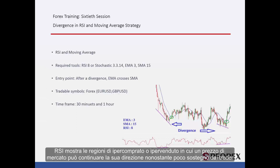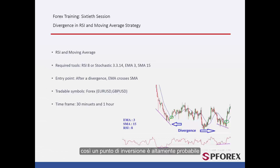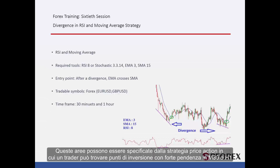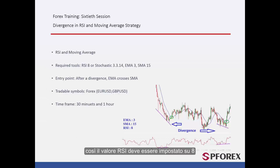RSI shows the overbought or oversold regions, in which a market price may continue its direction despite little support from traders. Thus, a reversal point is highly probable. These regions can be specified by the Price Action Strategy, in which a trader can find reversal points with sharp gradient in M30 or H1. Thus, RSI value should be set on 8.